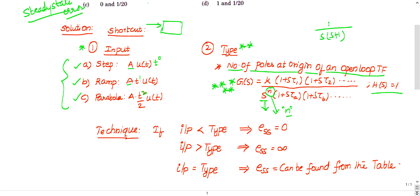For example, for a transfer function 1/[s(s+1)], the poles are at s=0 and s=−1. There is one pole at the origin, so the type is 1. This is how you find the type of a transfer function.